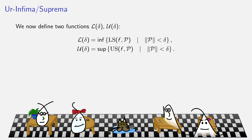Now we're defining two new functions: scripty L and scripty U of delta. What these are, are respectively the infimum of all lower sums across all possible partitions as long as the norm of the partition is less than delta, or the supremum of all upper sums. The function and the interval are not changing. For a fixed delta, you're asking: over all possible partitions whose norm is less than that, what's the infimum of all lower sums and the supremum of all upper sums?